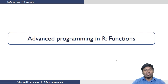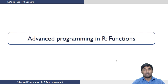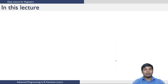Welcome to lecture 8 in the R module of the course Data Science for Engineers. In the previous lectures we have seen how to create functions and how to execute them, but we have limited ourselves to a single output. In this lecture we are going to see functions with multiple inputs and multiple outputs, which we call MIMO, and how to source and call those functions.